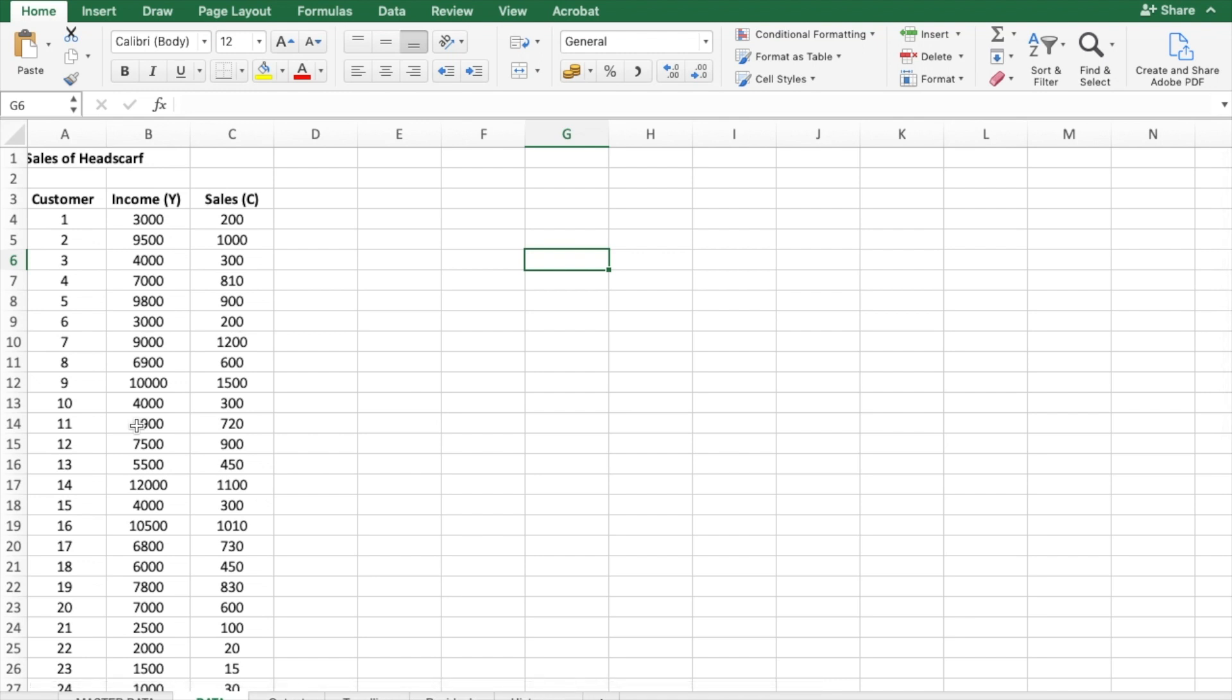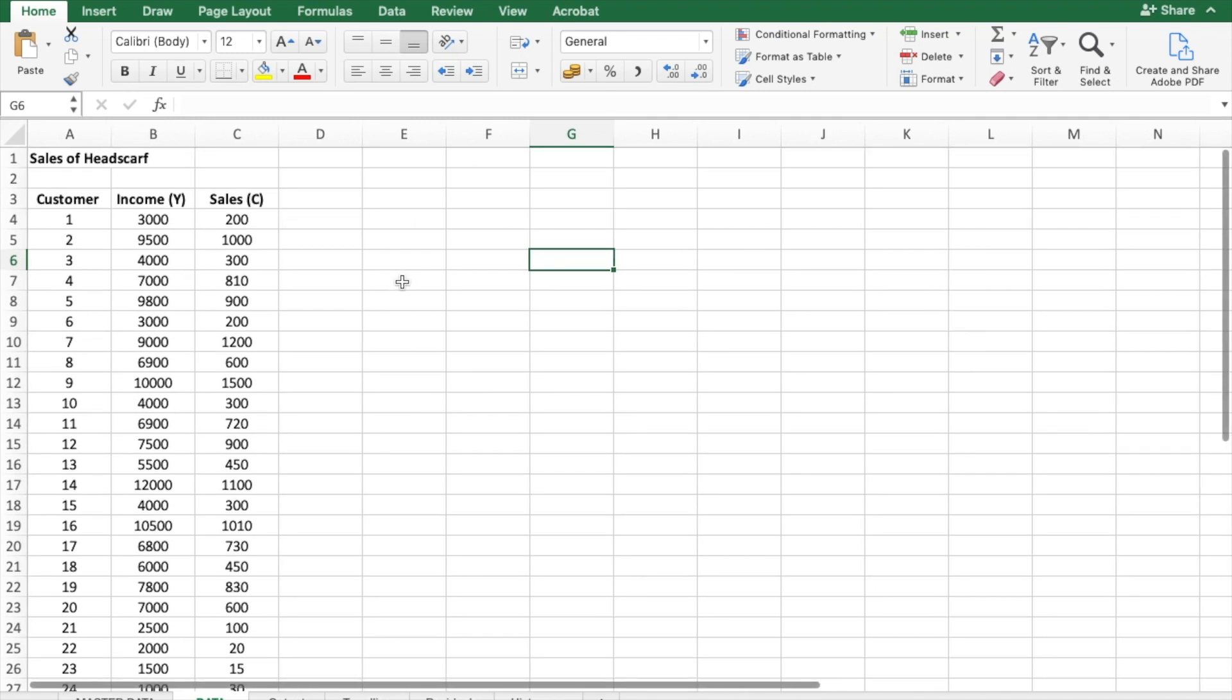So I want to see how is the trend between the sales and income. Now, what we can do is in Excel, we can firstly create a scatter plot to understand the trend.